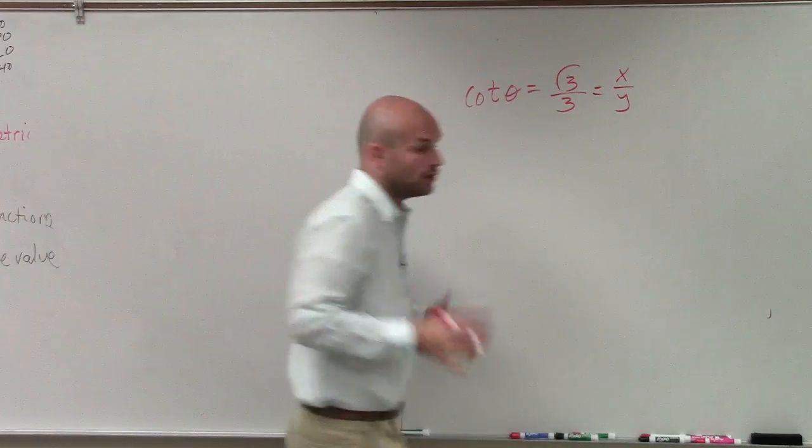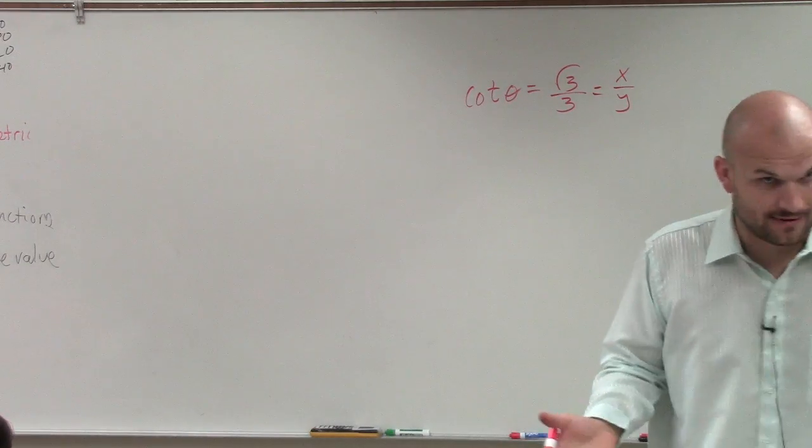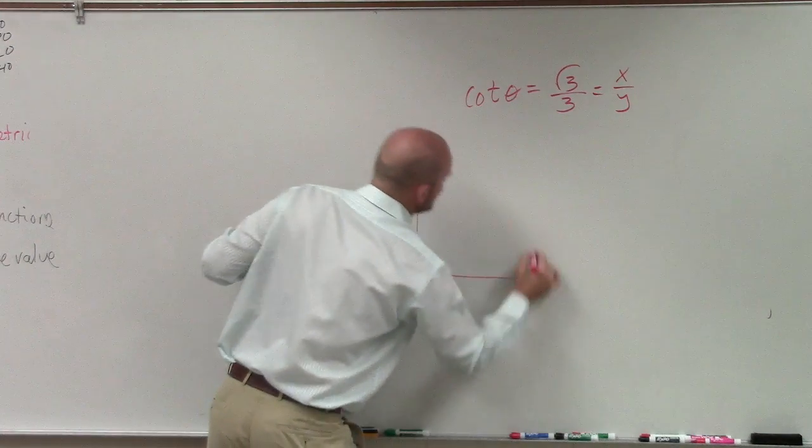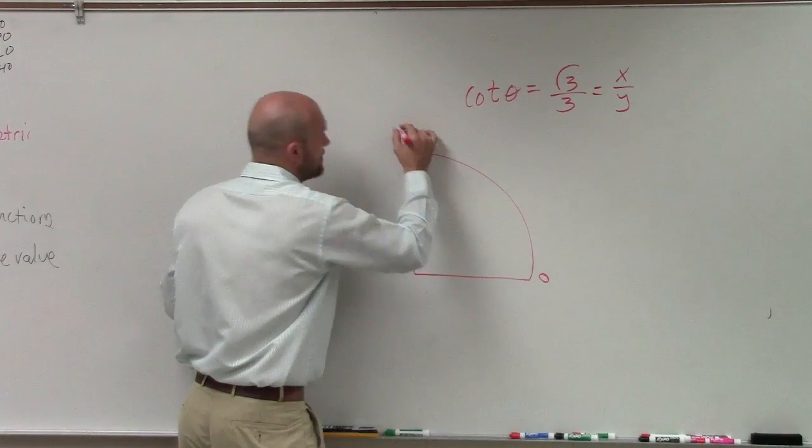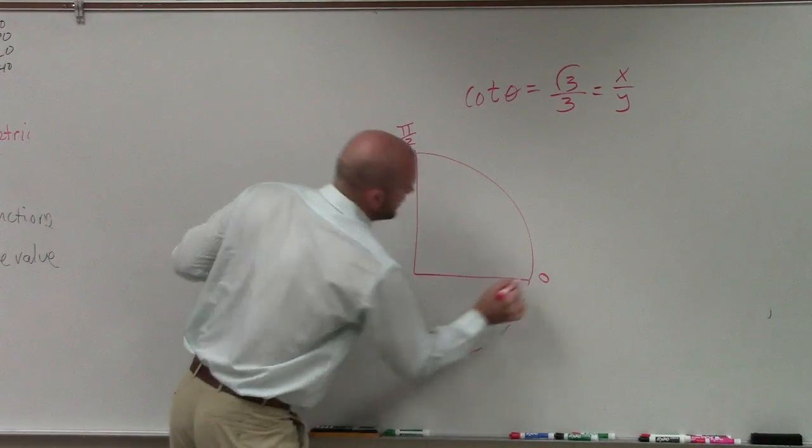So cotangent represents x over y when we have a point on the unit circle, right? Now remember, they said these points have to be between 0 and pi halves.